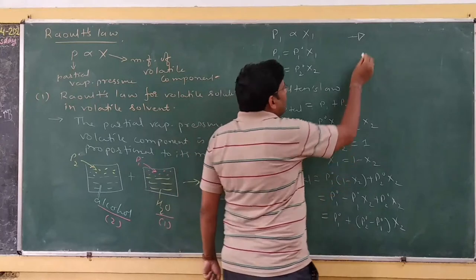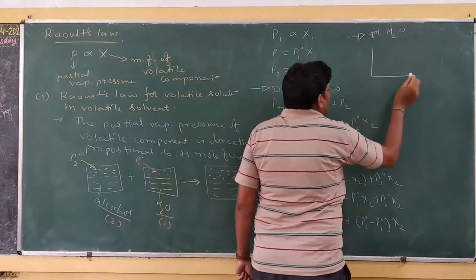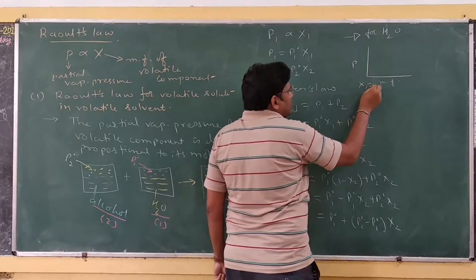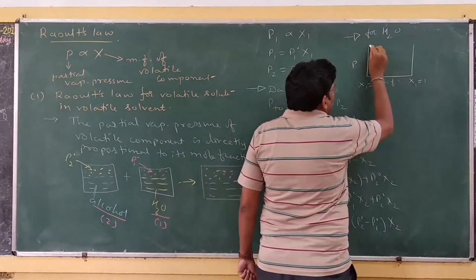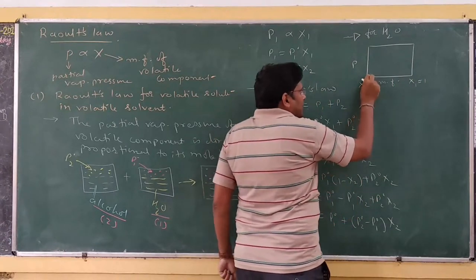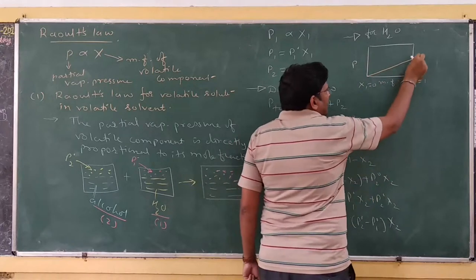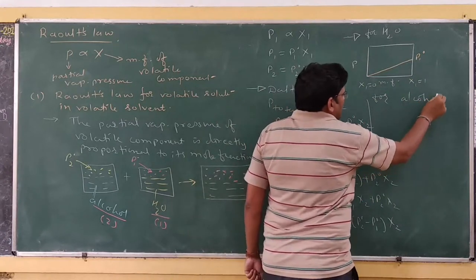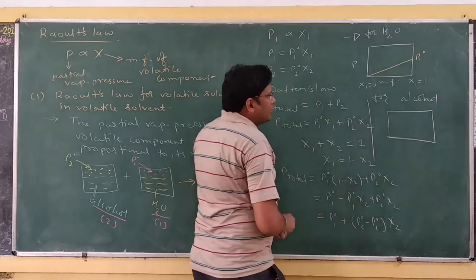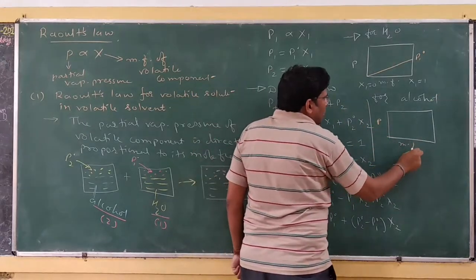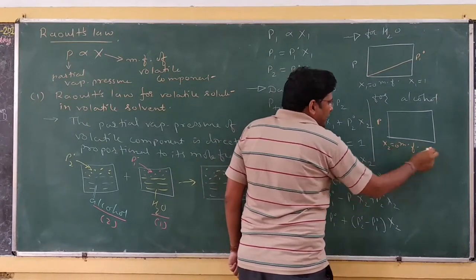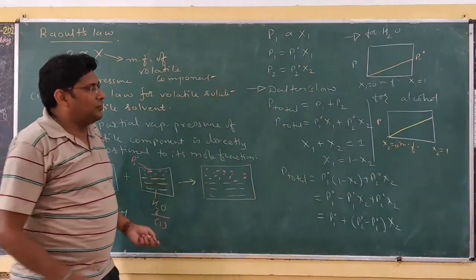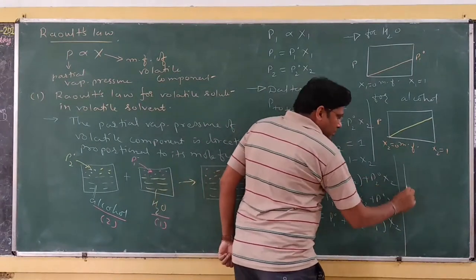Now if we draw the diagram of pressure versus mole fraction of water: initially at x1 equal to 0 and at x1 equal to 1, as the amount of water increases, the pressure also increases, reaching P1°. Again, for alcohol, the graph of pressure versus mole fraction of alcohol goes from x2 equal to 0 to x2 equal to 1. When we mix both compounds, we observe the combined graph.